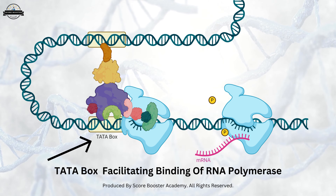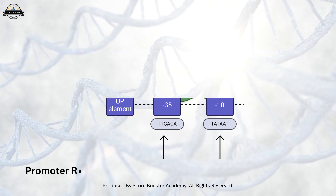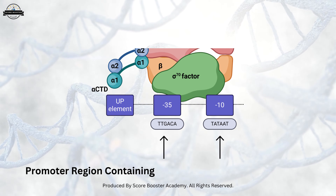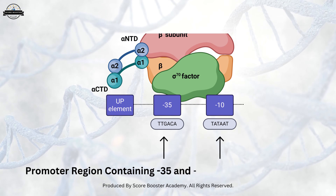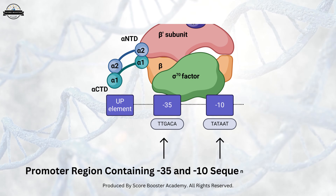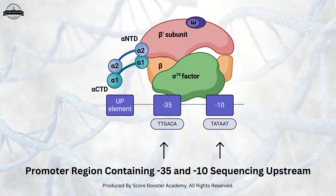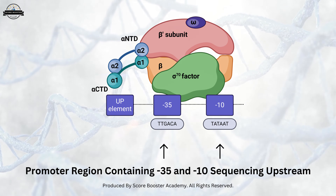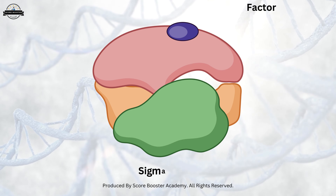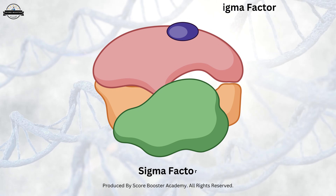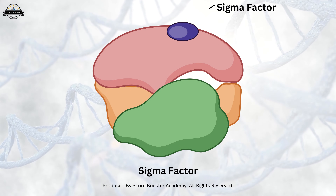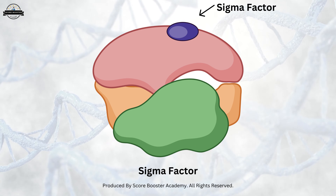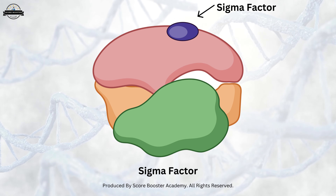In prokaryotes, the promoter region often contains minus-35 and minus-10 sequences upstream of the transcription start site. These sequences are recognized by the sigma factor, a subunit of RNA polymerase, which aids in the accurate initiation of transcription.